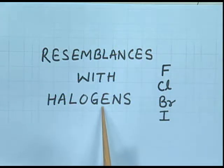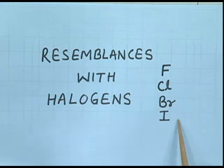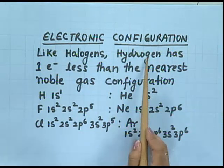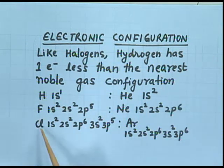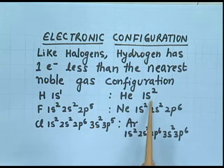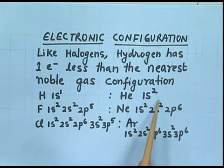Now we will see how hydrogen resembles halogens. Halogens are the seventeenth group elements: fluorine, chlorine, bromine, and iodine. Regarding electronic configuration: like halogens, hydrogen has one electron less than the nearest noble gas configuration. Hydrogen's electronic configuration is 1s1, and the nearest noble gas is helium with configuration 1s2. So hydrogen is just one electron short of the nearest noble gas electronic configuration.